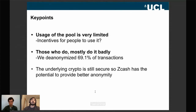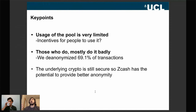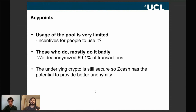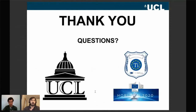The key points of this presentation: usage of the shielded pool was very limited and still is today. The first big question is how to incentivize people to use it more — many who got de-anonymized probably wanted to remain private but either didn't know how to use the pool or found the implementation difficult. Those who do use the pool often do it in a suboptimal way, so we also need to incentivize better usage. The underlying cryptography is still secure after the patch. Zcash has the potential to provide much better anonymity than Bitcoin, but some issues remain to be solved. Thank you — I'm happy to answer any questions.